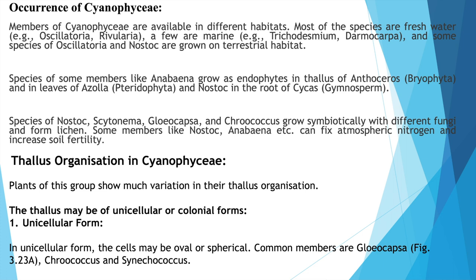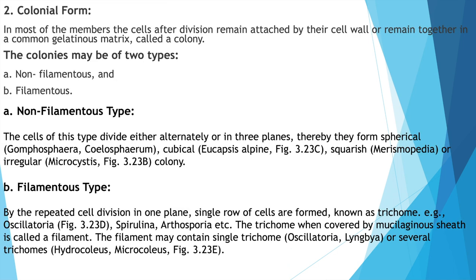Plants of this group show variation in their thallus organization. The thallus may be unicellular or colonial. Unicellular forms have cells that may be oval or spherical — common members are Gloeocapsa, Chroococcus, and Synechococcus. In colonial forms, cells after division remain attached by their cell wall or remain together in a common gelatinous matrix, forming a colony. Colony may be of two types: non-filamentous and filamentous.